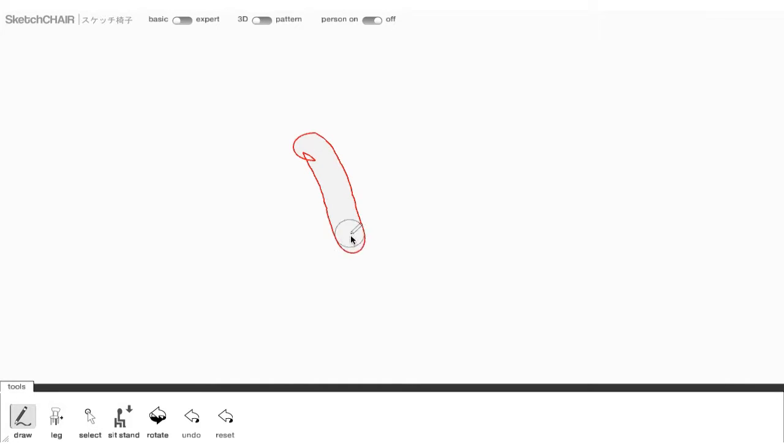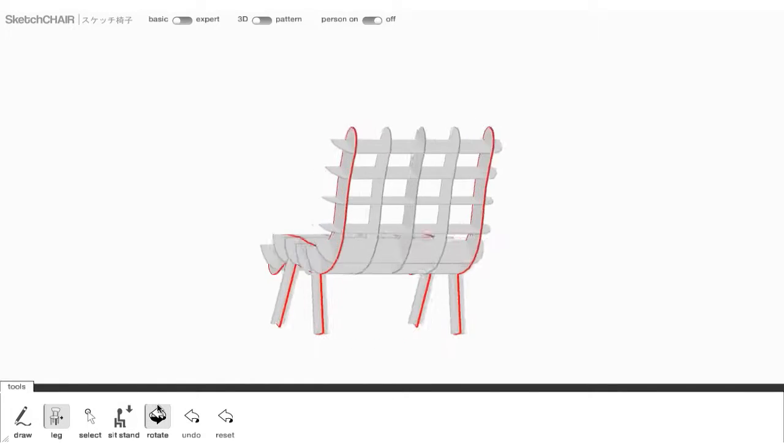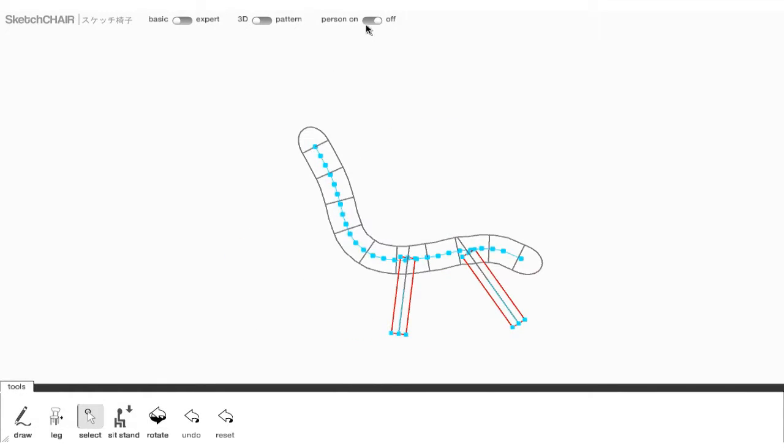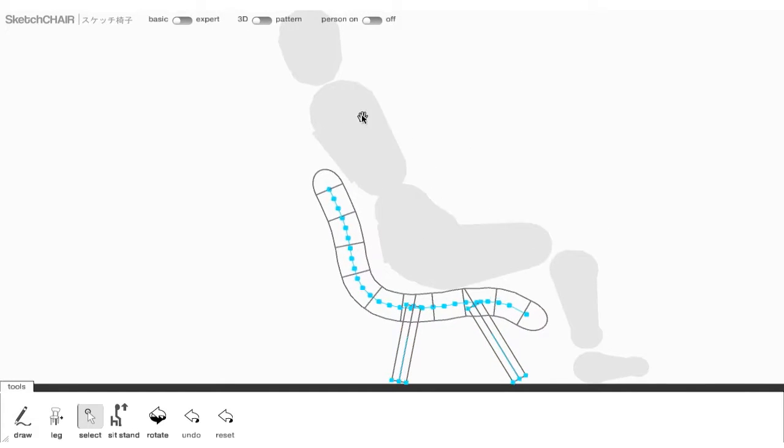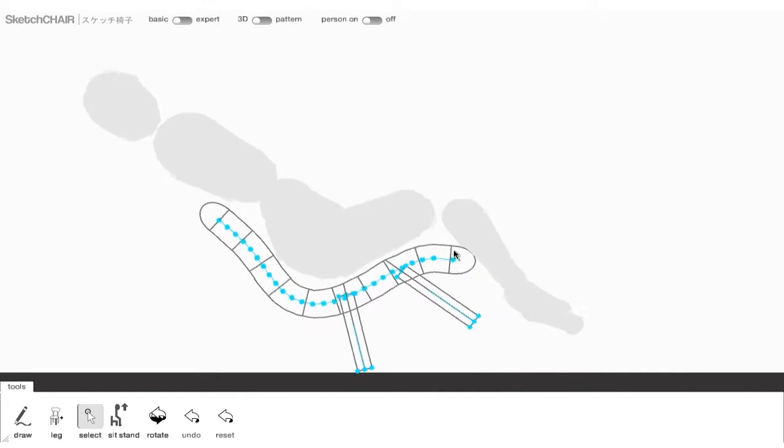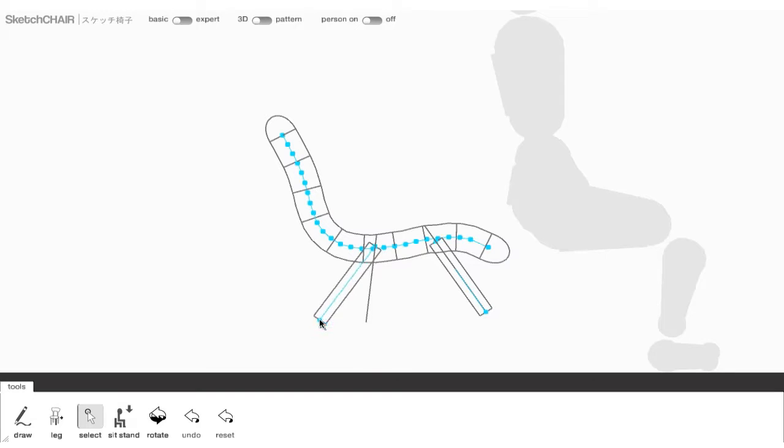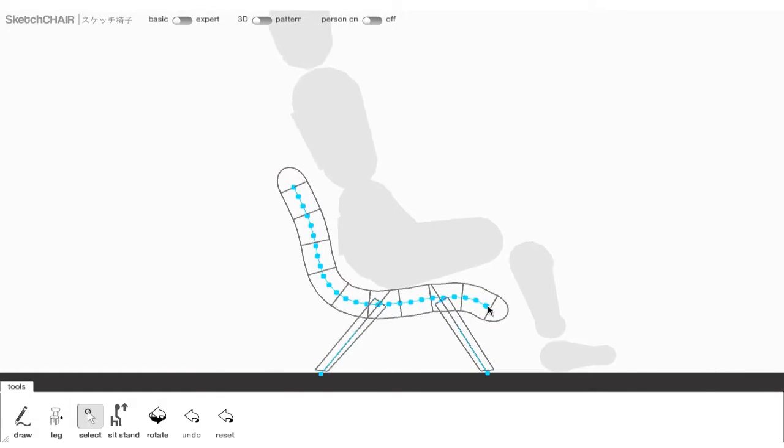Sketch chairs are designed using a simple sketch-based interface that then generates the chairs and allows you to virtually sit in them, testing their stability to see if they're going to fall over, if they're going to break, and also to make sure that the chair fits your proportions, so it's just the right size for you.